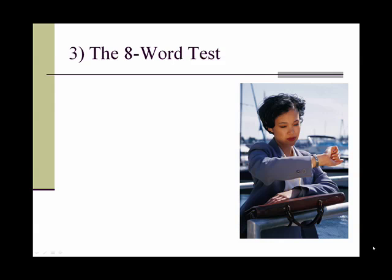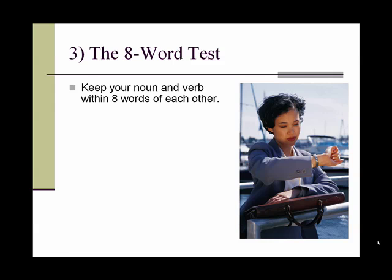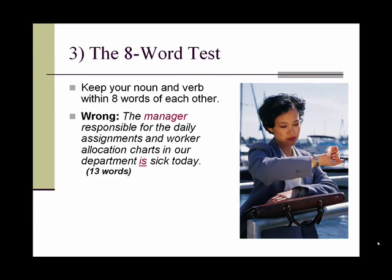Tip number three is to perform the eight-word test. We should keep our noun and our verb within eight words of each other — the closer, the better. Don't make your reader work too hard to keep track of who is doing what.